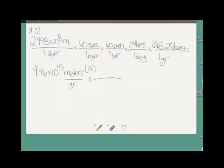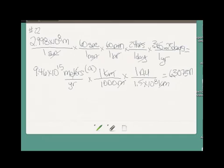I had to change first meters to kilometers. Now, I know that one astronomical unit is 1.5 times 10 to the 8th kilometers. Multiply all that out, and we get the answer to B, which is 63,073 astronomical units per year.